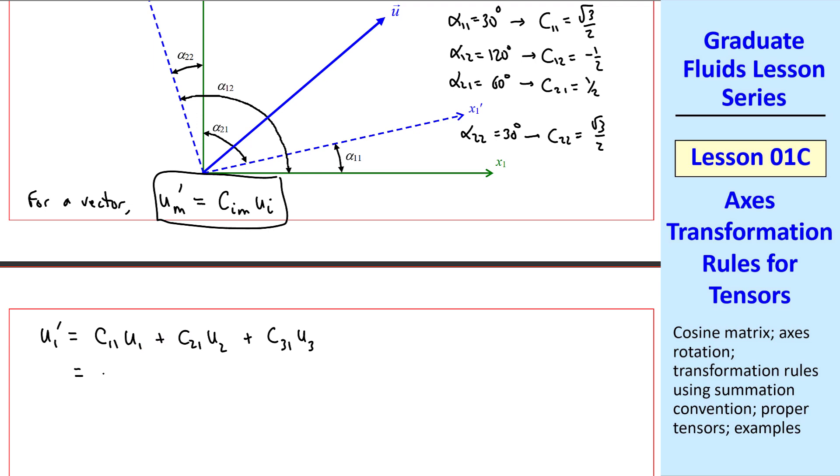Plugging in our cosine matrix and the original components u1 and u2, where for this 2D problem anything with a 3 subscript is 0, I get 3.7236 meters per second. To three digits in my final answer, u'1 is 3.72 meters per second.